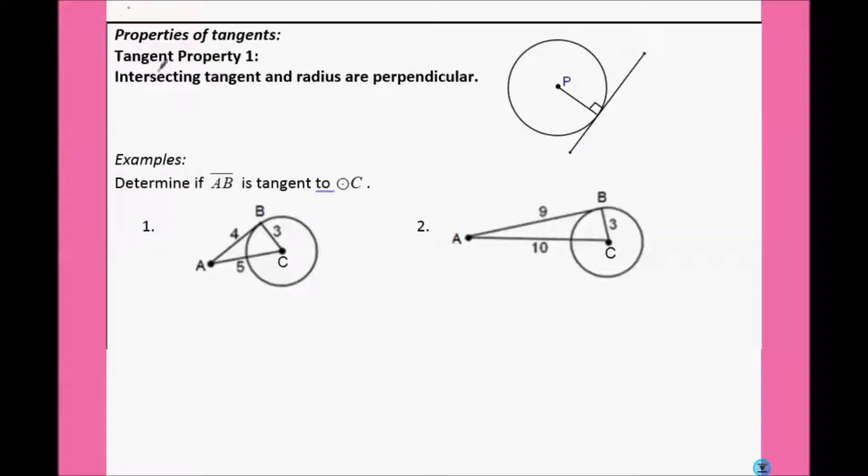So our first special property is that if we have an intersecting tangent and radius, they're going to be perpendicular. So here's our radius, here's the tangent, they form a right angle. We know they're perpendicular because they made a right angle.